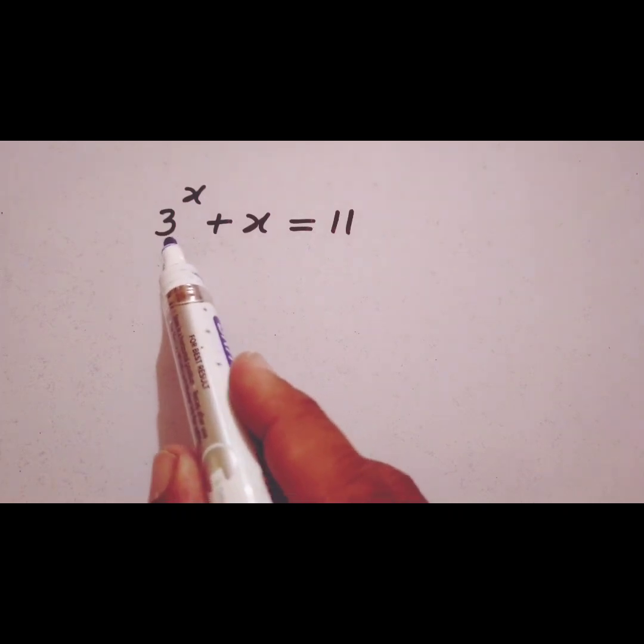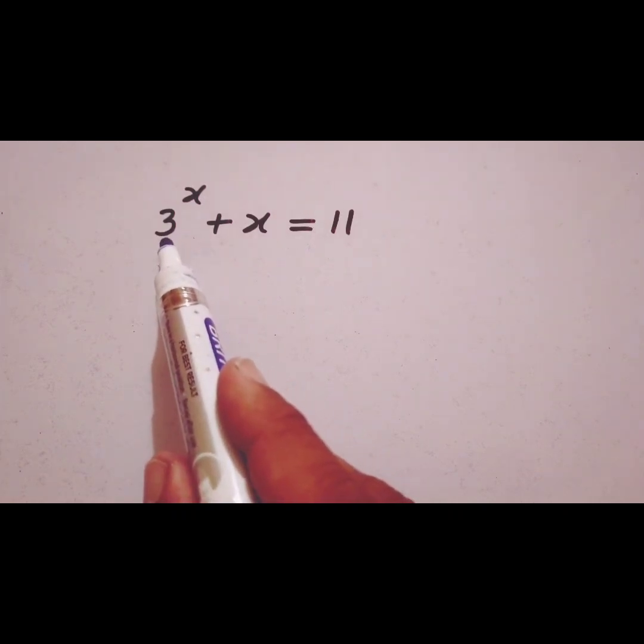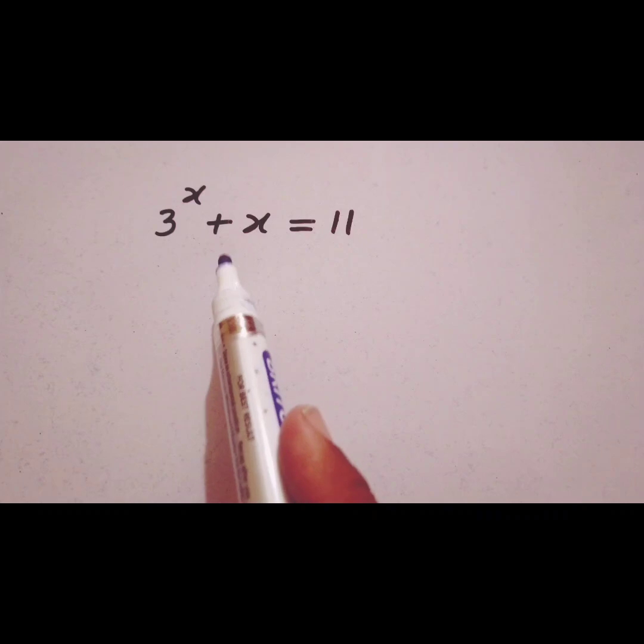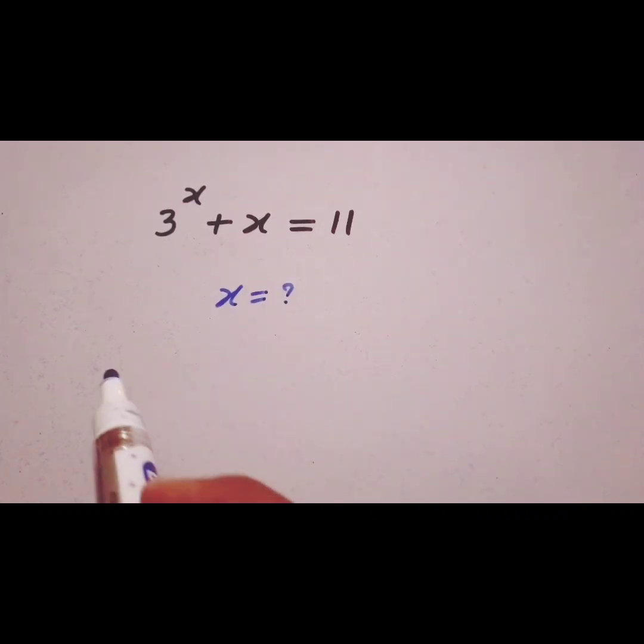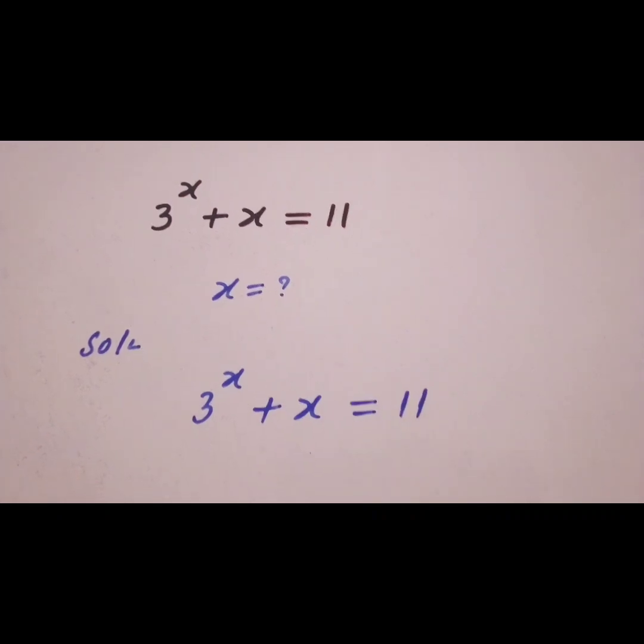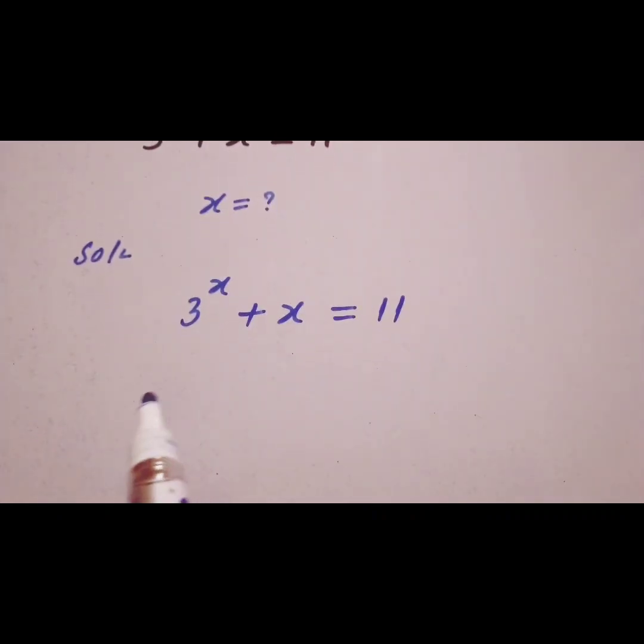Welcome to solving this problem. We want to find x in this expression. Let's come to the solution. We have 3^x + x = 11. Move this positive x from the left hand side to the right hand side.